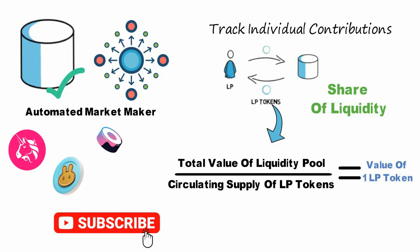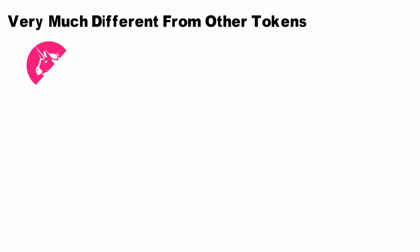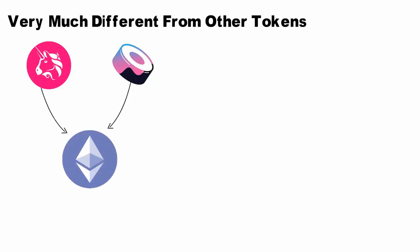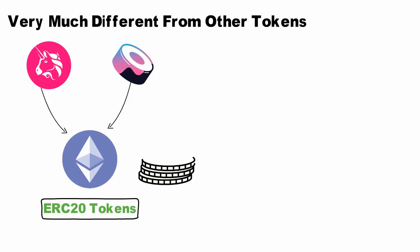In terms of technical properties, LP tokens aren't very different from other tokens on the same network. For example, LP tokens issued by Uniswap and SushiSwap — both of which operate on the Ethereum network — are actually ERC-20 tokens. Like any other ERC-20 token, these LP tokens can be transferred, traded, and staked on other protocols.